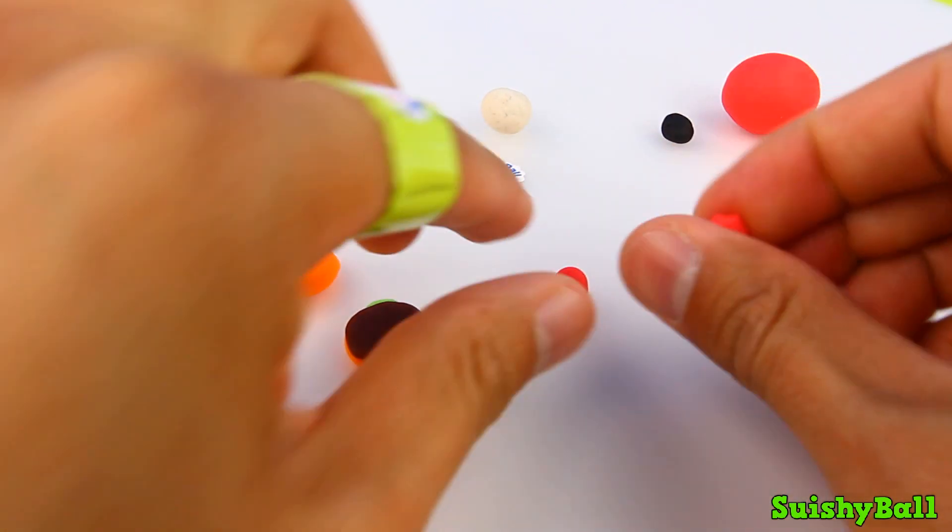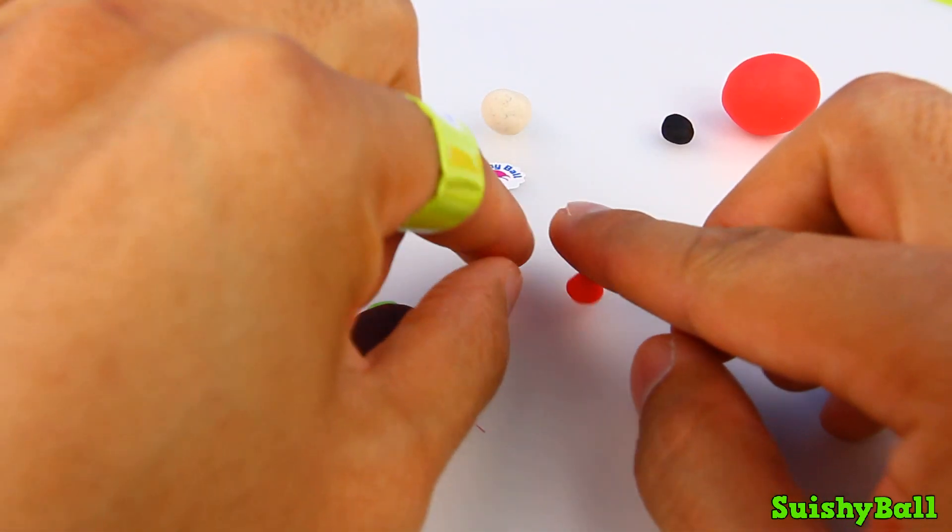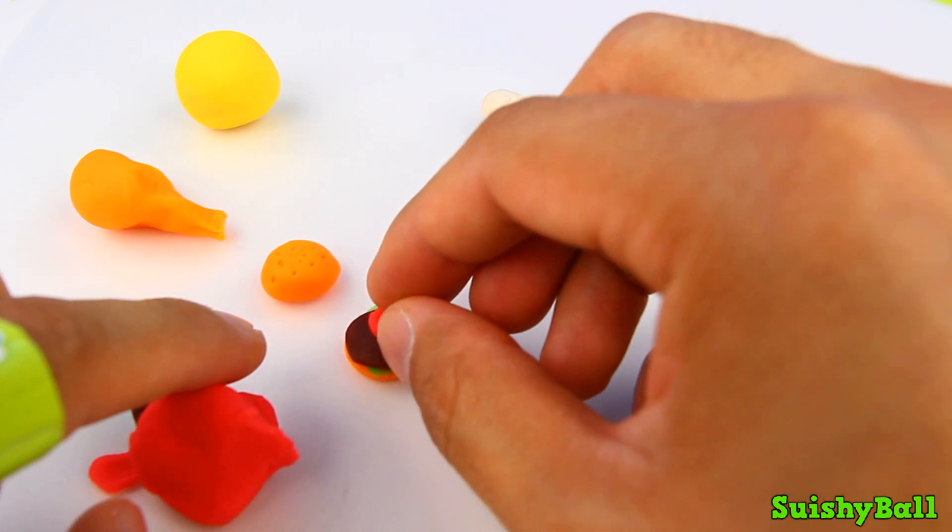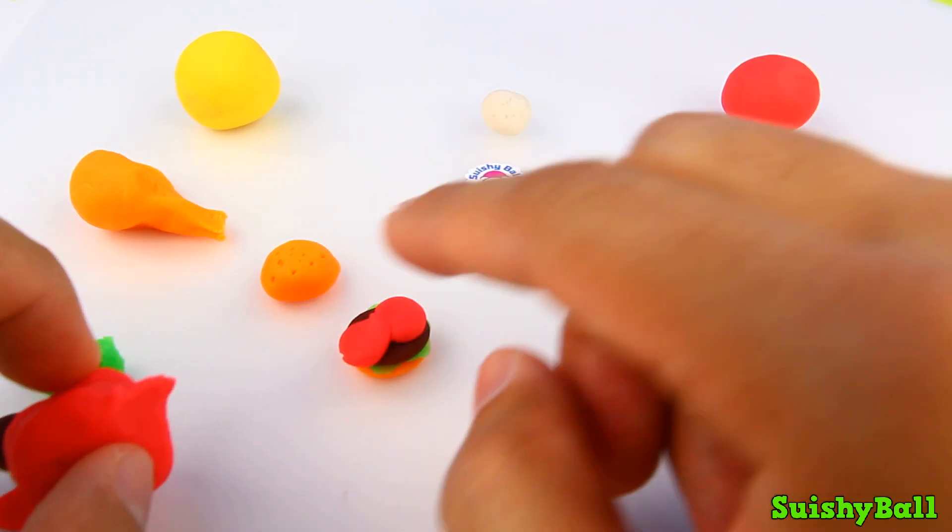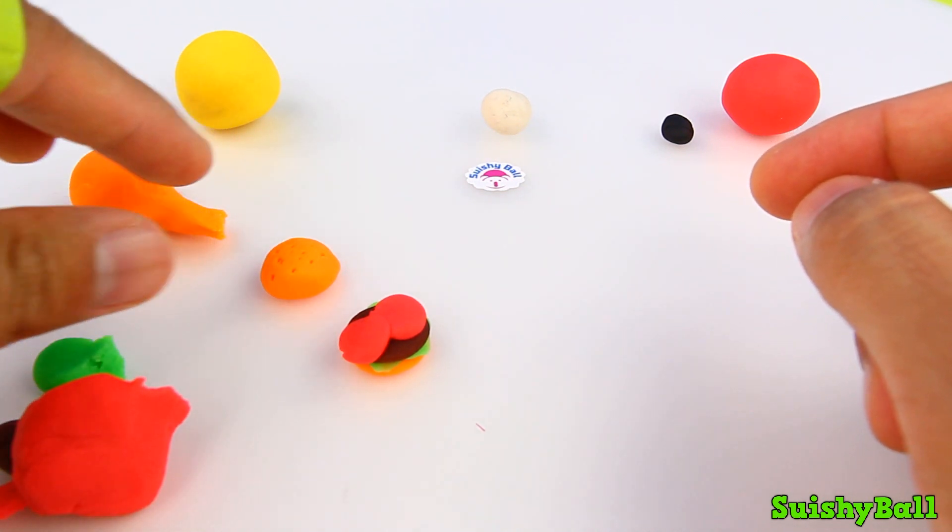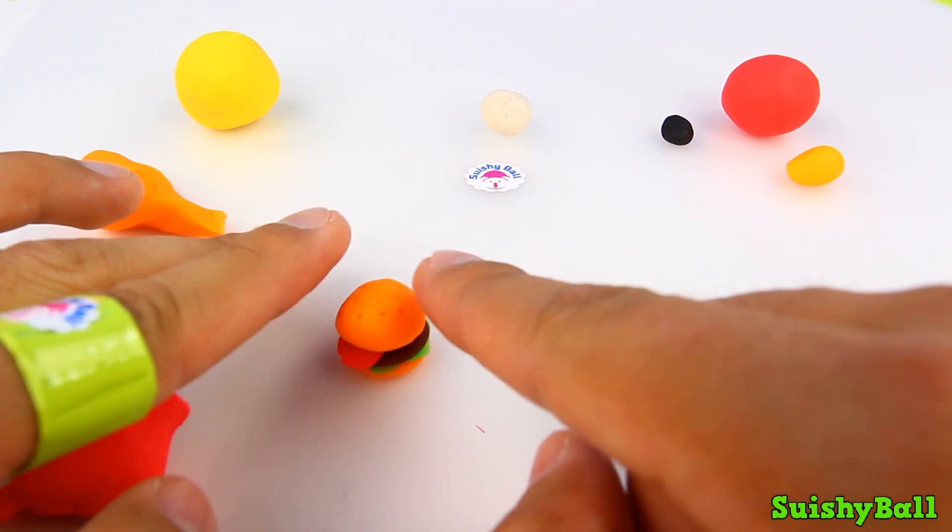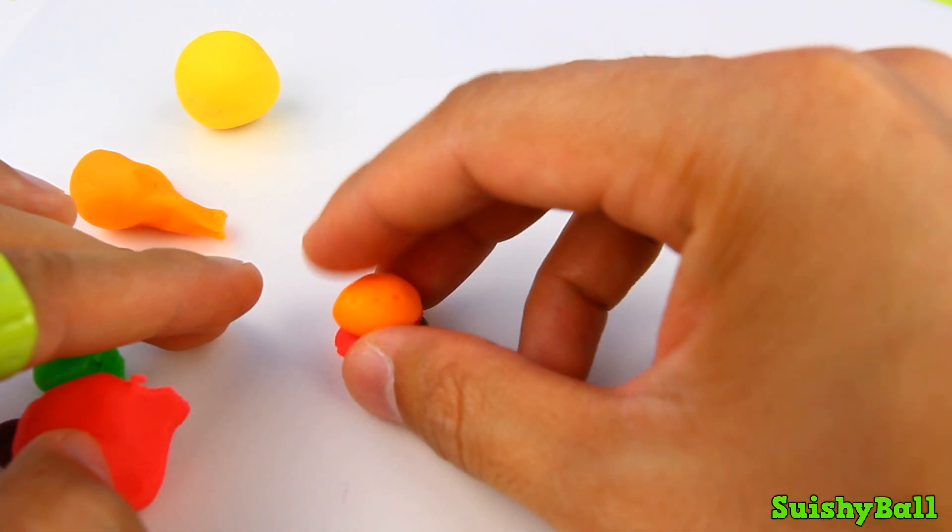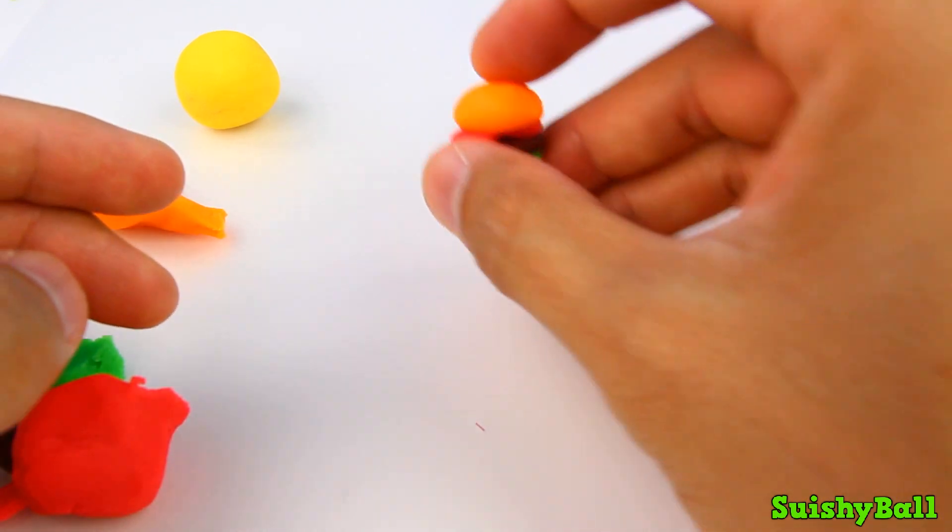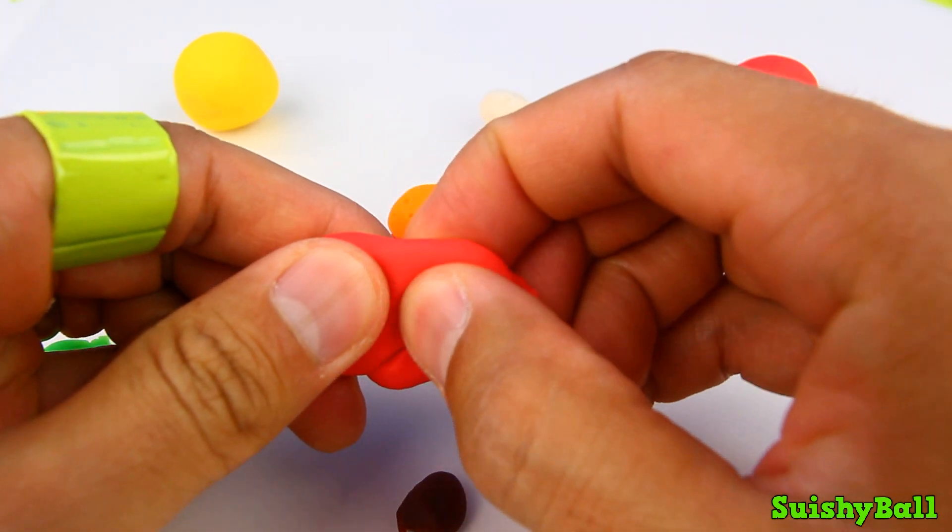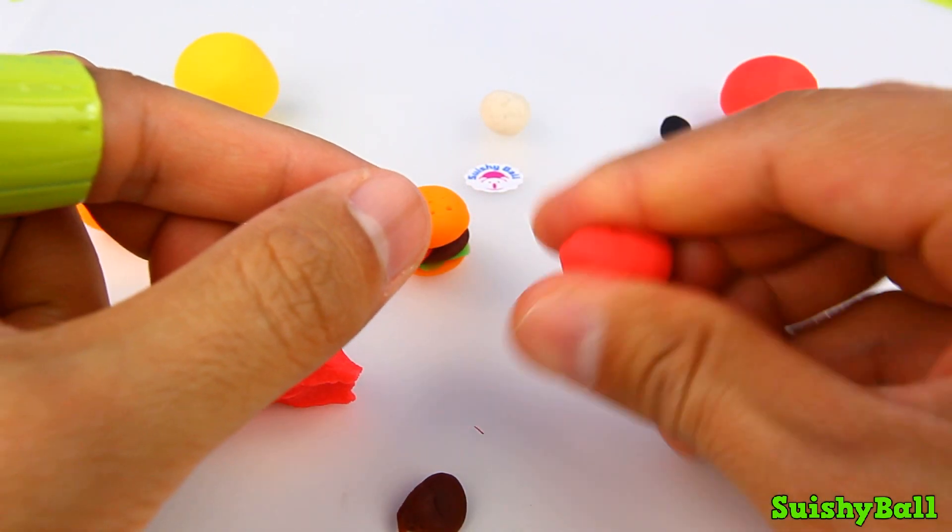Let's actually make two little slices of tomatoes, so there's one and there's the other. Okay, and then let's put the top bun on. So there is our little burger. Next I'm going to make the set of fries.